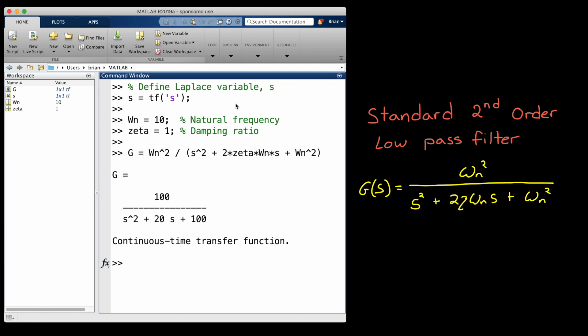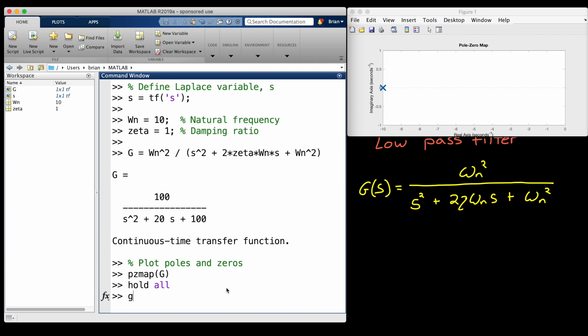This has two poles that we can move around by adjusting omega n and zeta. For now, I'll just set the natural frequency to 10 radians per second and a damping ratio of 1, which means that this is a perfectly damped system and there's a double pole at s equals minus 10.